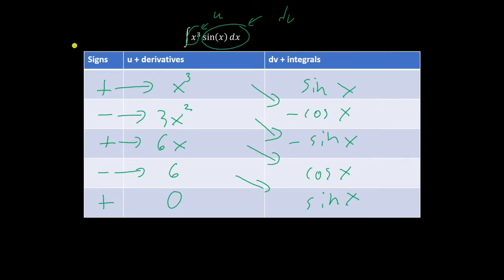So when we just write all this out, we're going to get negative x cubed cosine of x plus 3x squared sine of x plus 6x cosine of x minus 6 sine of x plus c. That would have been a real pain to do by integration by parts, wouldn't it?